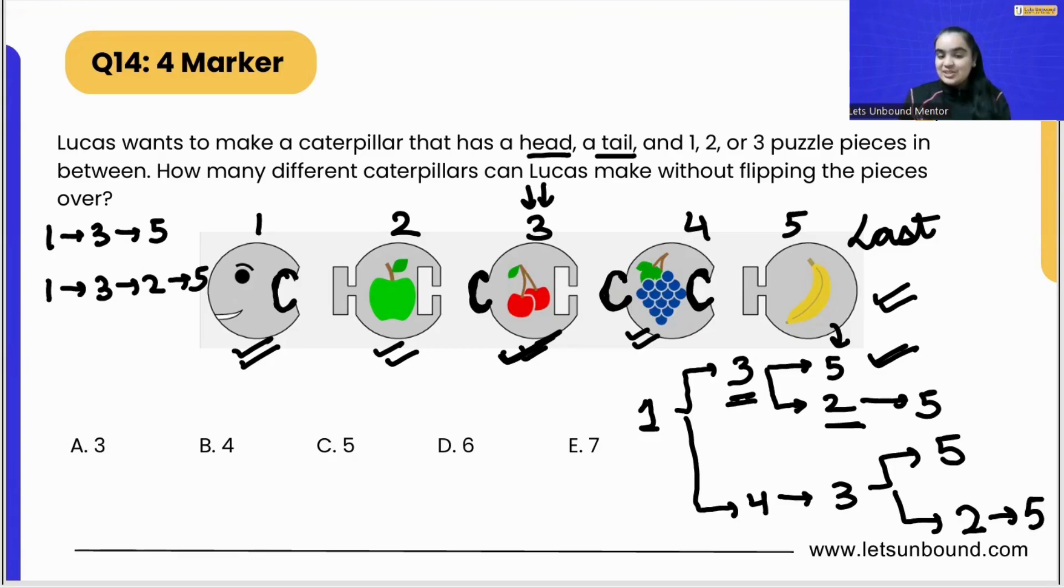So these two other types of combinations are there wherein the fourth piece is also there. So how does the pattern look like? 1, 4, 3, 5, and then again 1, 4, 3, 2, 5.